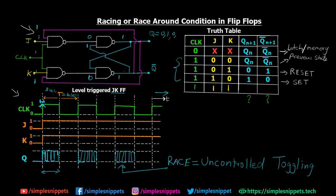When it is level triggering and the clock is high for a considerable amount of time, in that time the switching happens many times. When edge triggering is used, at every positive or rising edge that switching might happen only once — Q goes from 0 to 1 or from 1 to 0, and that's it. But with level triggering, if the clock stays high for a considerable amount of time, the switching happens very fast and frequently — that is the undesirable race condition.